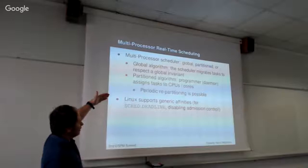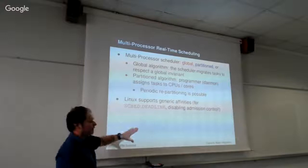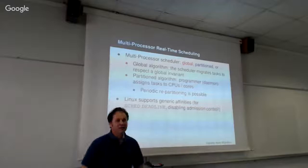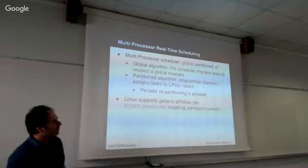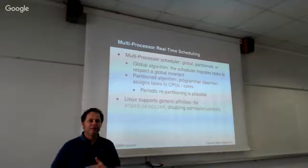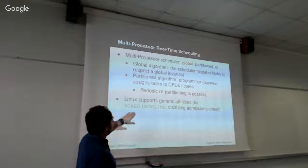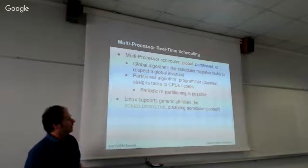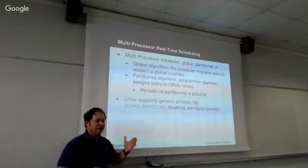Linux supports both global and partitioned scheduling, and also supports something more generic: you can specify CPU affinities for tasks and the scheduler will respect them. With SCHED_DEADLINE, there is something a little surprising — to use generic CPU affinities you have to disable the admission control mechanism. By default, the scheduler runs admission control when you schedule a task as SCHED_DEADLINE, guaranteeing CPUs won't be overloaded. The analysis for generic affinities is much more complex and was not considered a good idea to implement in the kernel.